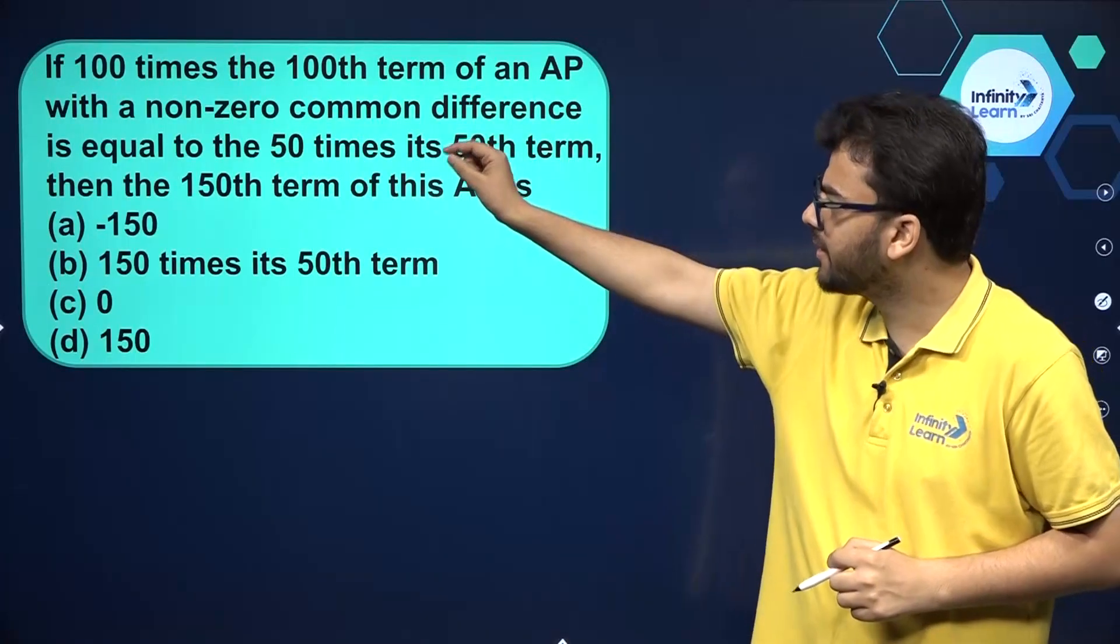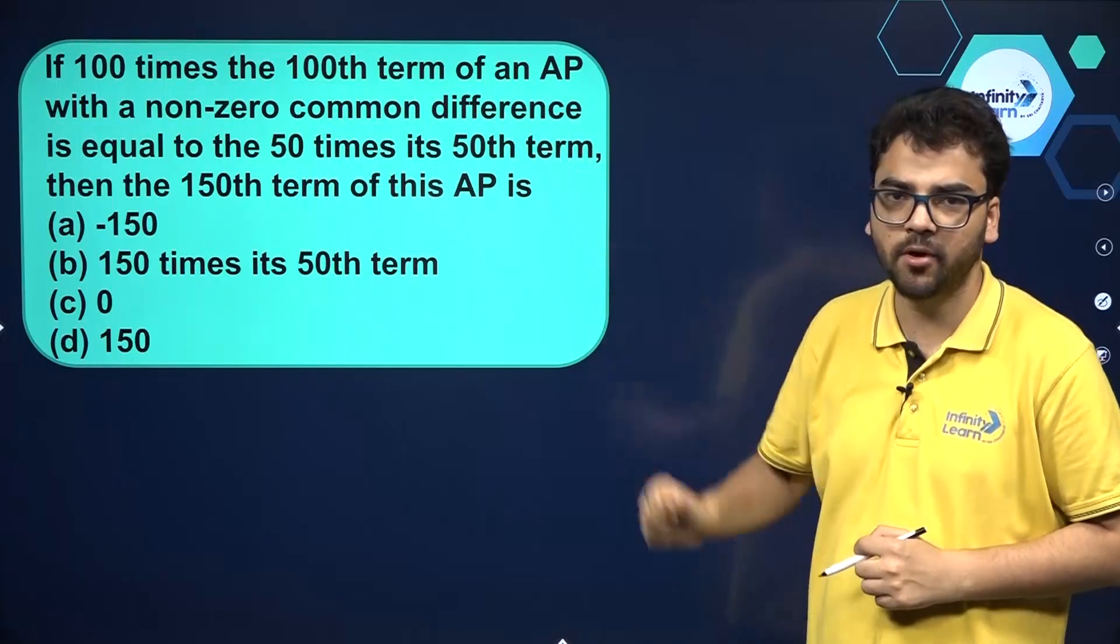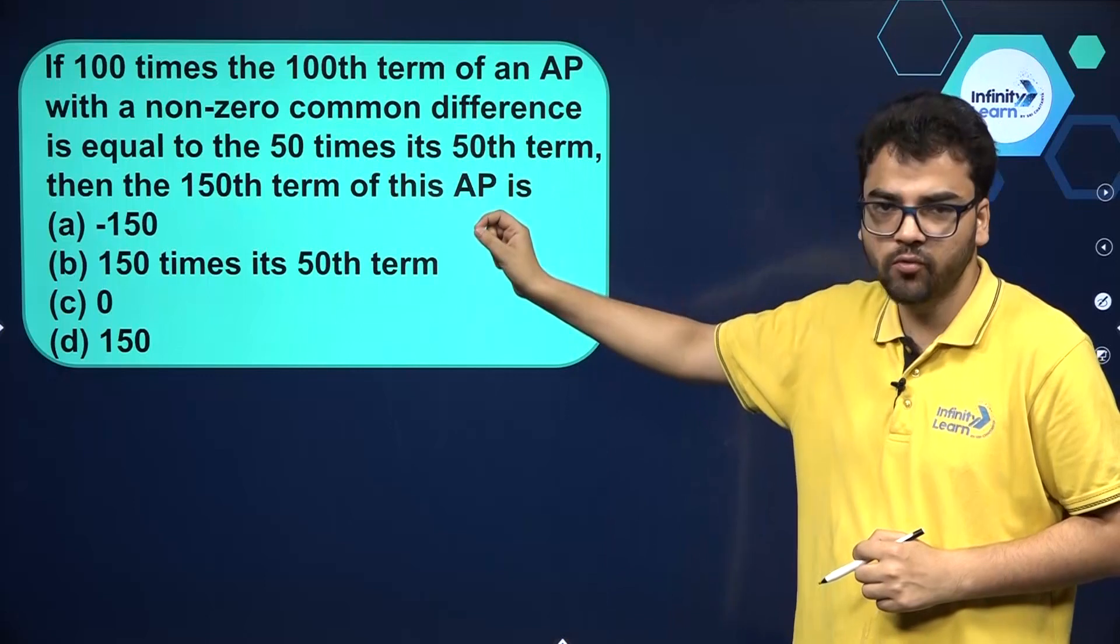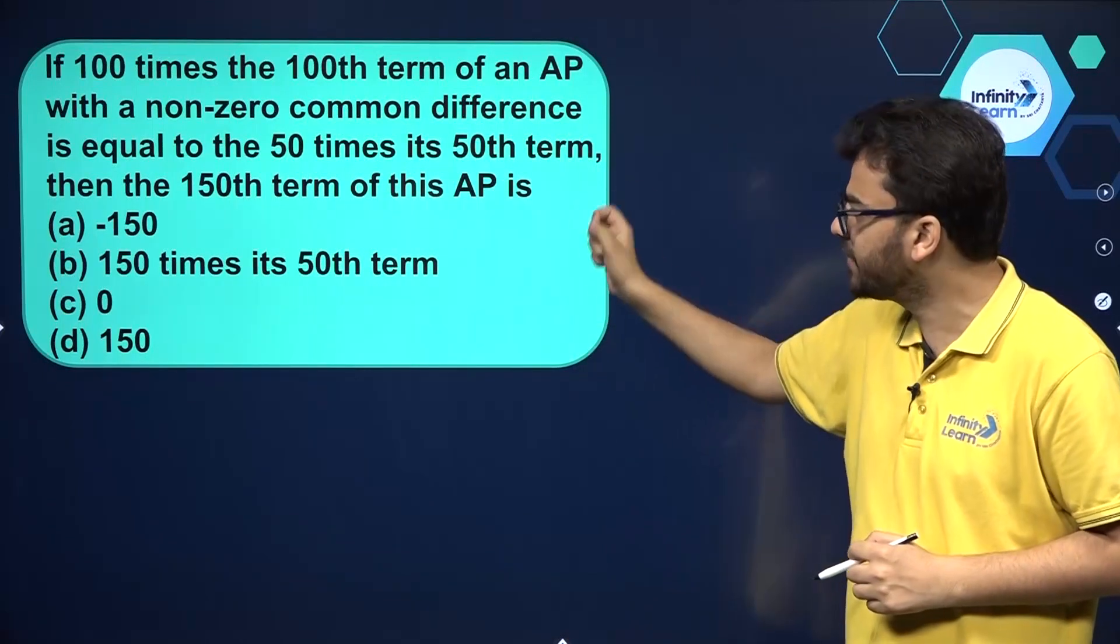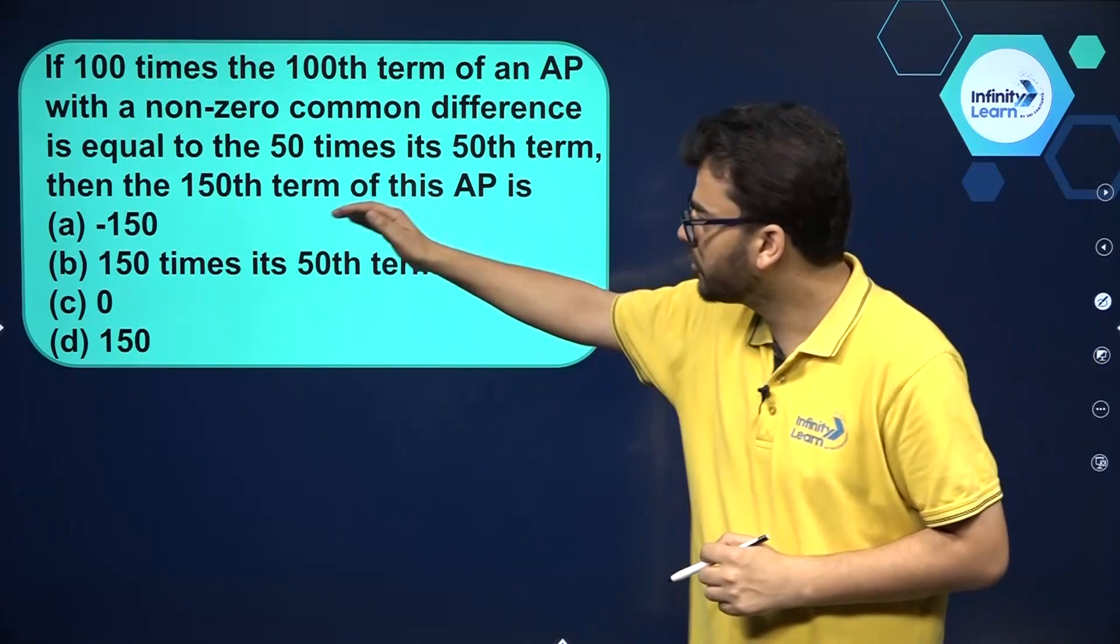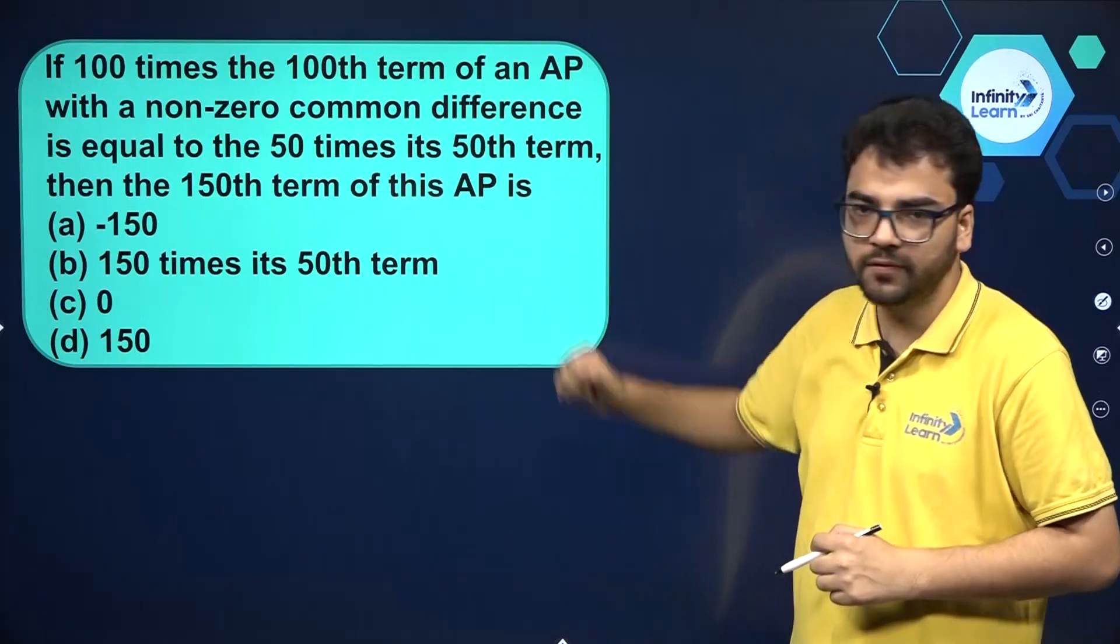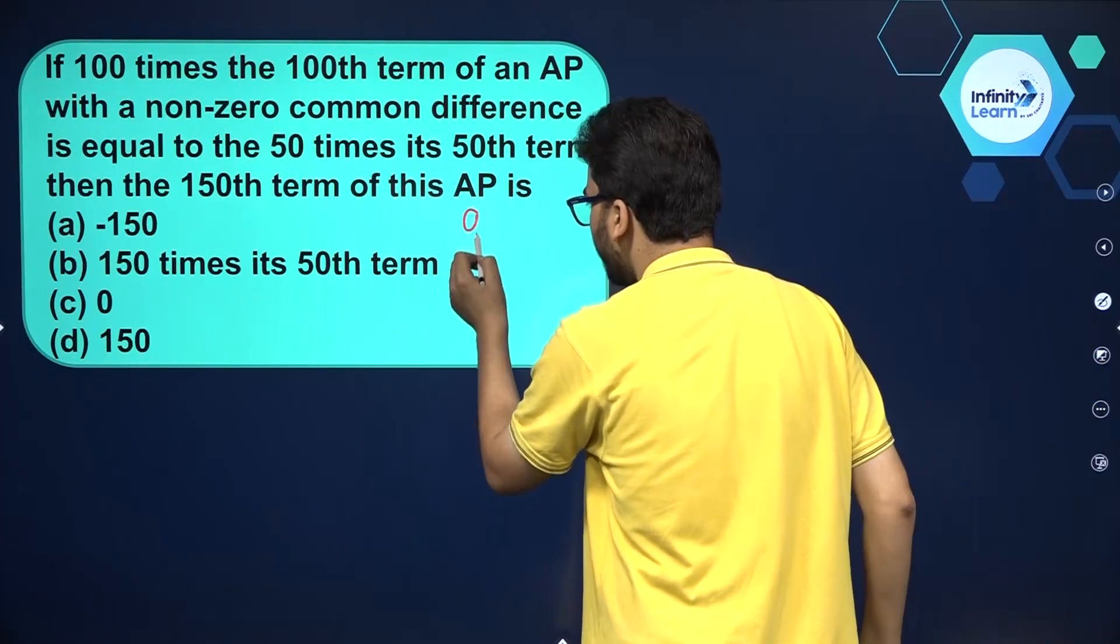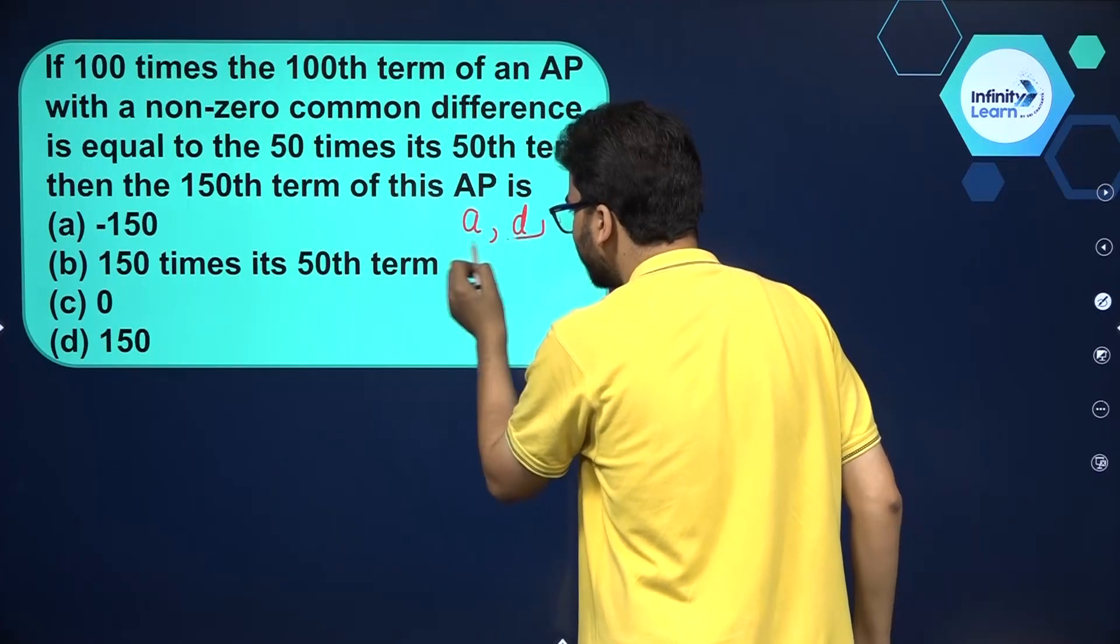In this question it is given that if 100 times the 100th term of an AP with a non-zero common difference is equal to 50 times its 50th term, then we have to find the 150th term of this AP. Suppose the first term of this AP is A and the common difference is D.